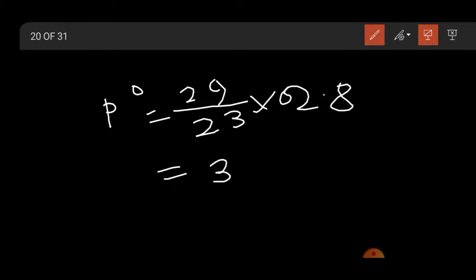From here we can calculate Po equal to 29.23 into 2.8. That means pressure will be 3.53 kilopascal.